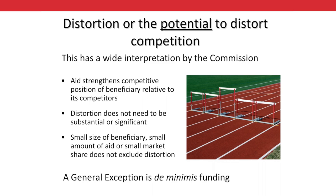Distortion or potential to distort competition. The threshold for this test is very low and it is up to the member state to prove there is no distortion or potential to distort. Aid undoubtedly strengthens the position of the beneficiary in the marketplace. For example, if we gave a mobile phone manufacturer money to set up a production unit, this would decrease their running costs, which would in turn mean they could produce their product cheaper, resulting in them being able to sell their product cheaper — and there would be potential to distort competition. The Commission considers even small amounts of aid to be distortive and is not concerned about the size of the beneficiary or the size of their market share.